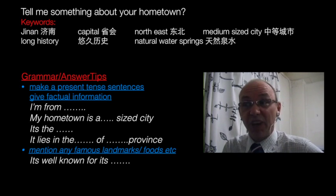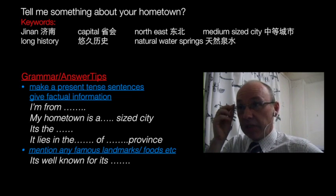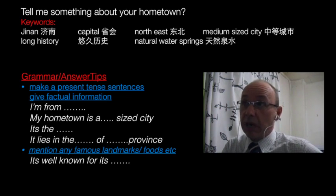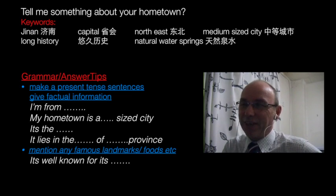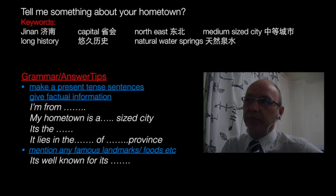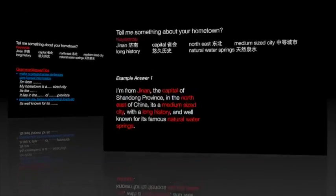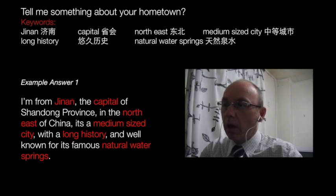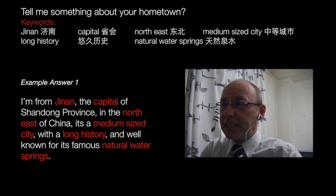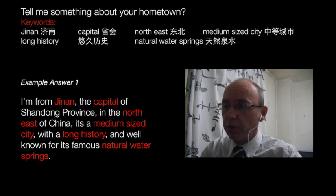It could be foods or famous landmarks. For example, Jinan is well known for its natural water springs, and like most cities in China it has a long history. Putting that all together: 'I'm from Jinan, the capital of Shandong province in the northeast of China. It's a medium sized city with a long history and well known for its famous natural water springs.'